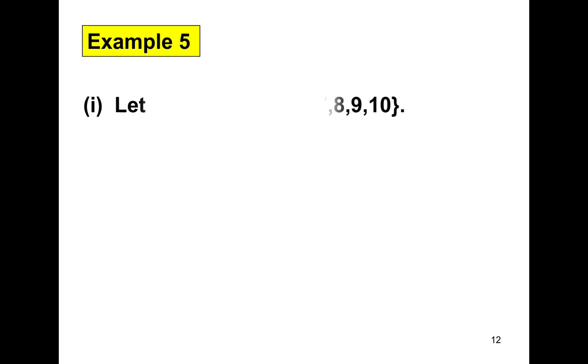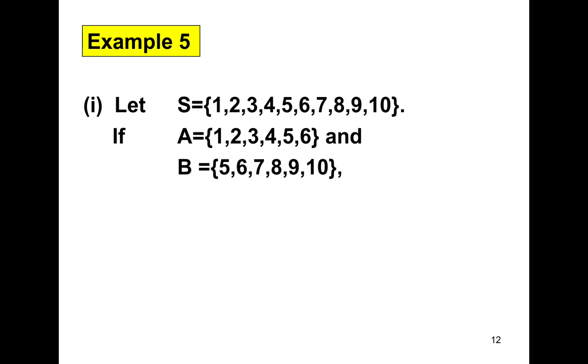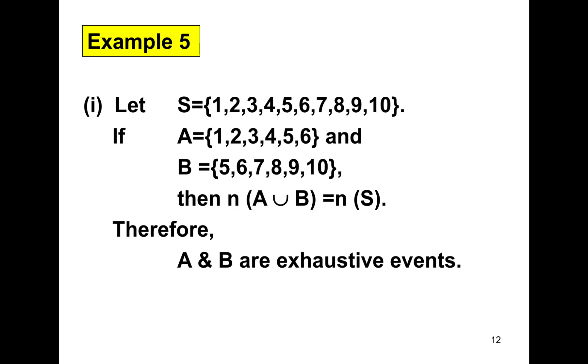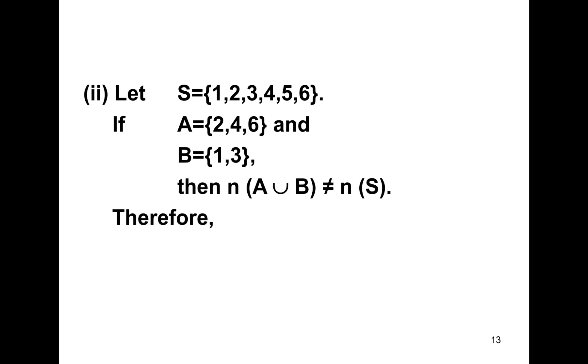Now, for example number 5. Let S be 1, 2, 3, 4, 5, 6, 7, 8, 9, 10. So, if A is equal to 1, 2, 3, 4, 5, 6, and B are 5, 6, 7, 8, 9, 10. Then, you may say that A union B, and the number of the element of A union B is equal to the number of sample space. Therefore, we say that A and B are exhaustive events. Let's compare it with this example, that S equal to 1, 2, 3, 4, 5, 6, and the element of A are 2, 4, 6, and B, 1, and 3. So, if you compare the number of A union B with the number of sample space, it is obvious that it's not equal to each other. Therefore, A and B are not exhaustive events.